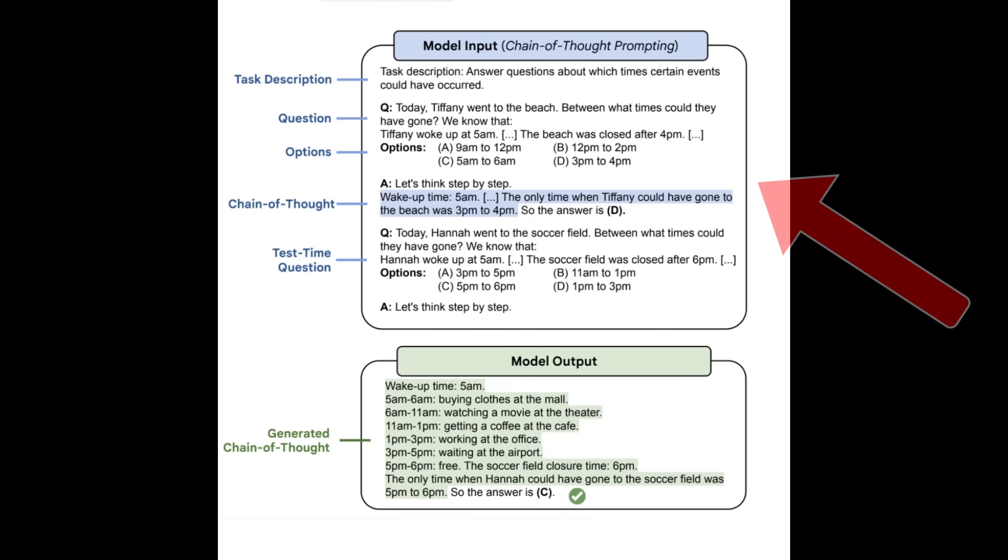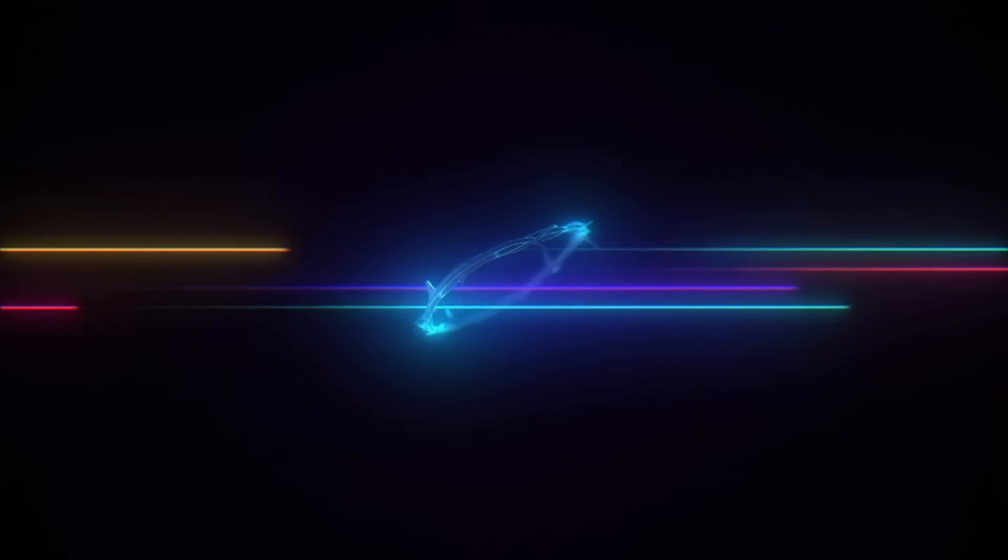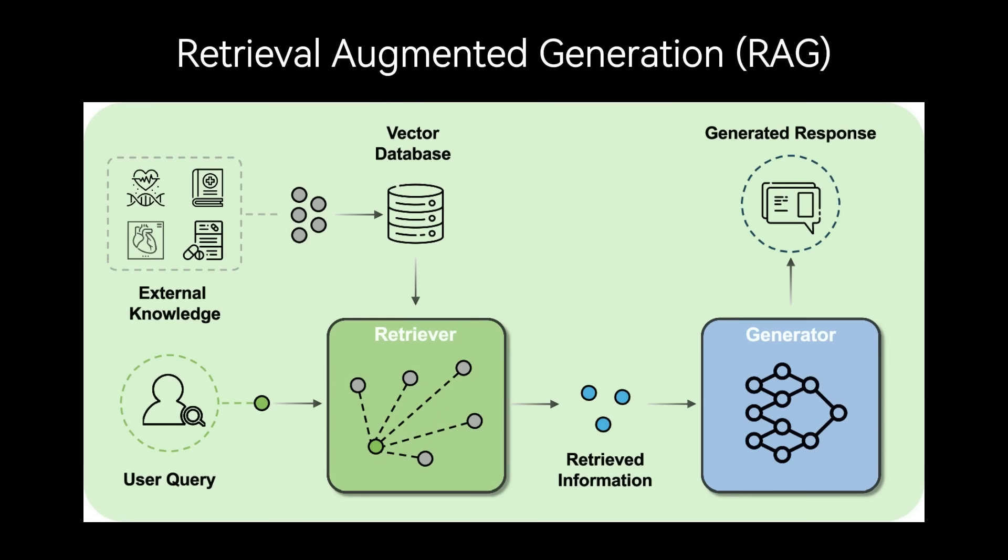By contrast, if the goal is to add dynamic knowledge that changes frequently, for example company policies or news, retrieval augmented generation or RAG is more appropriate. Fine-tuning is best for style and stable expertise.